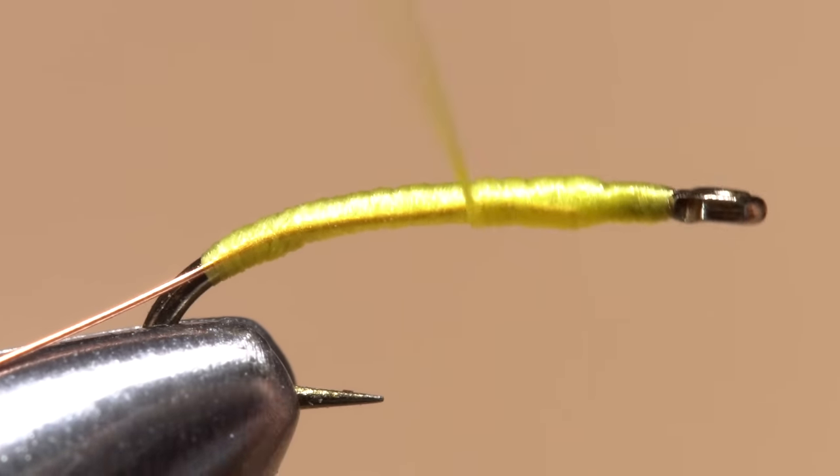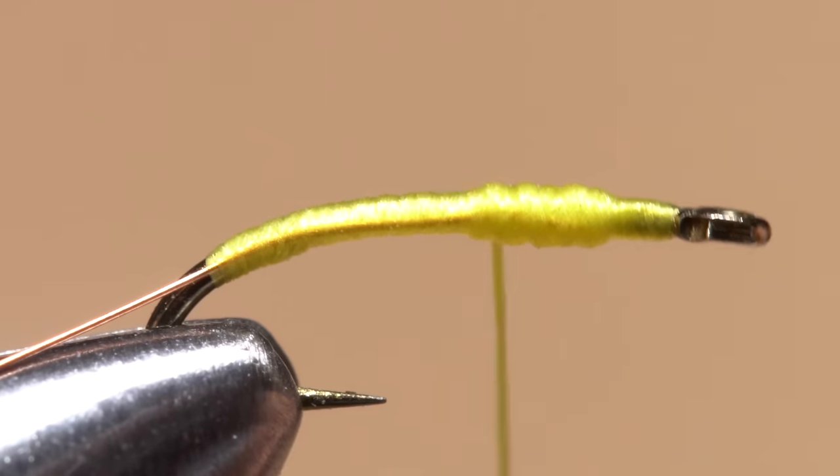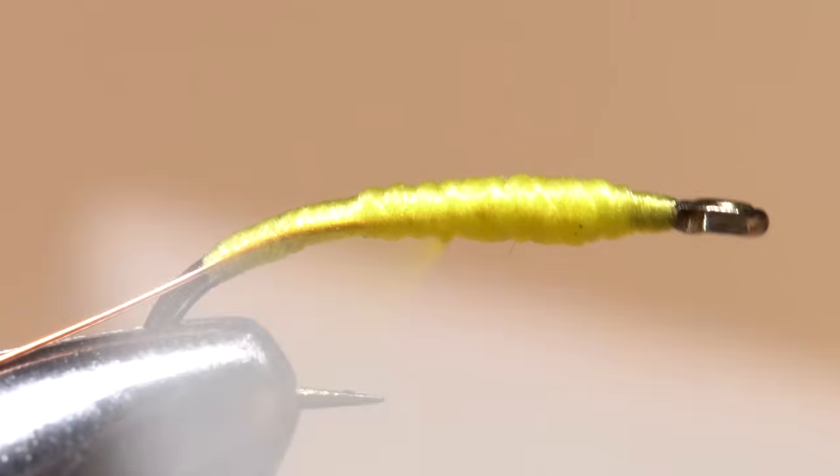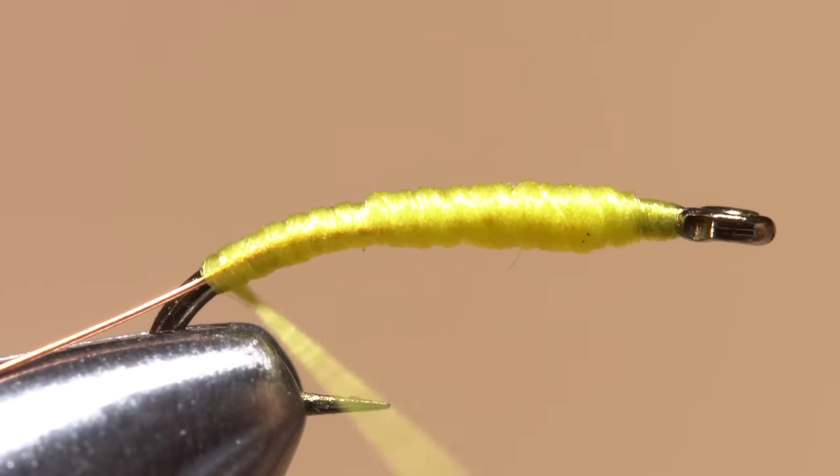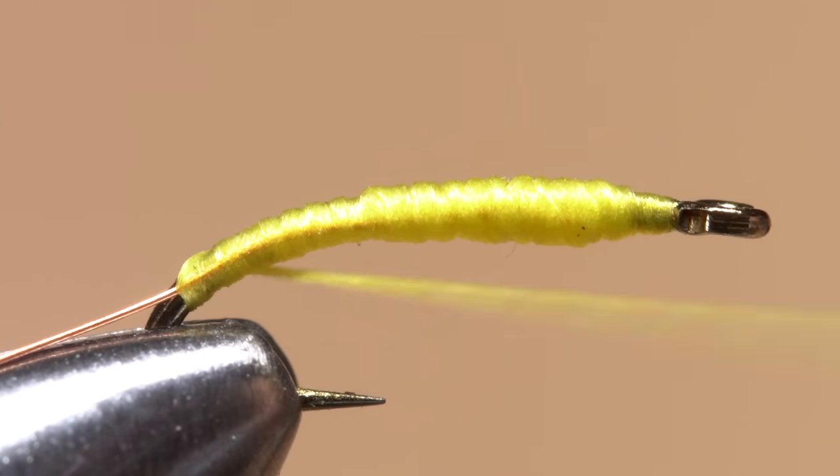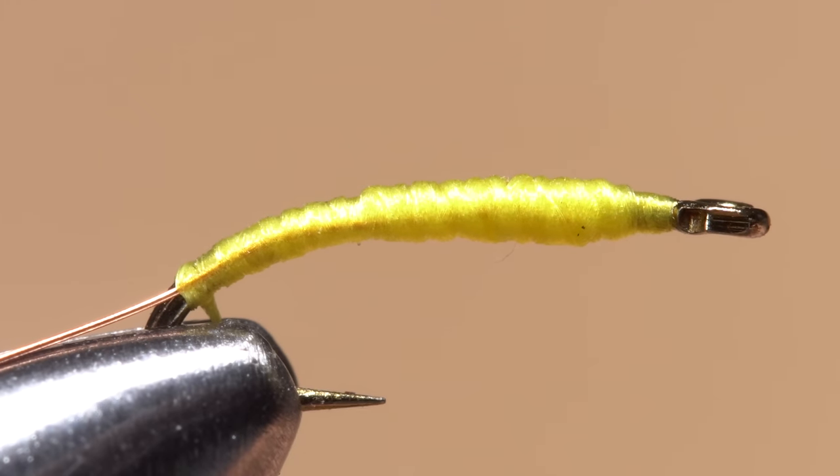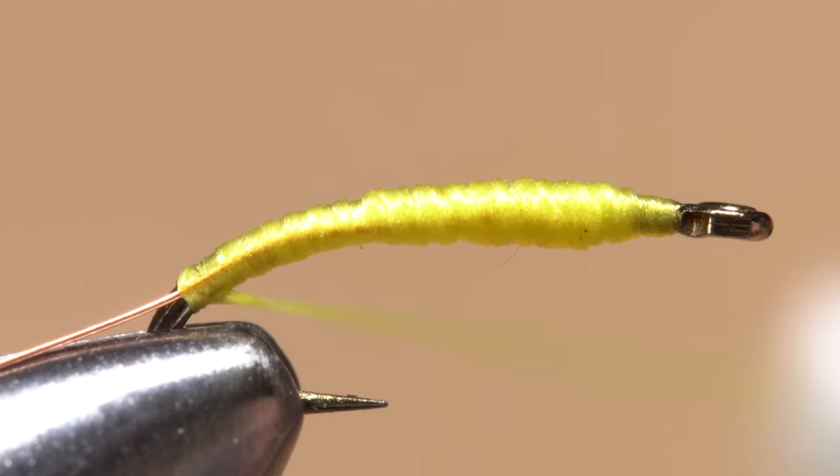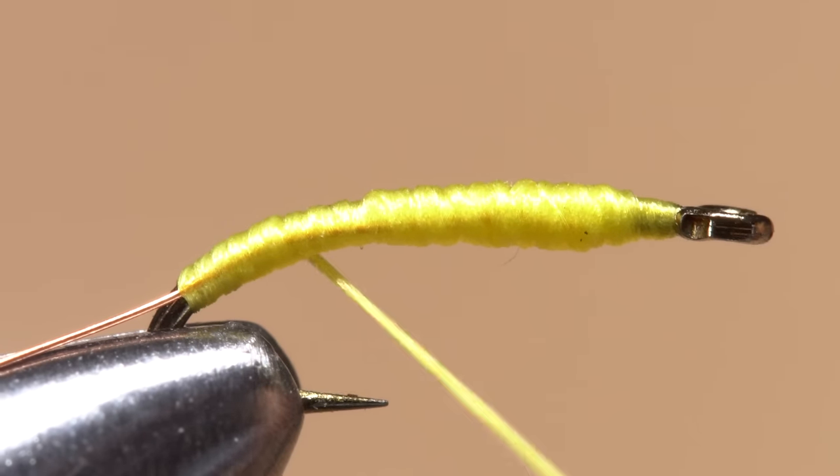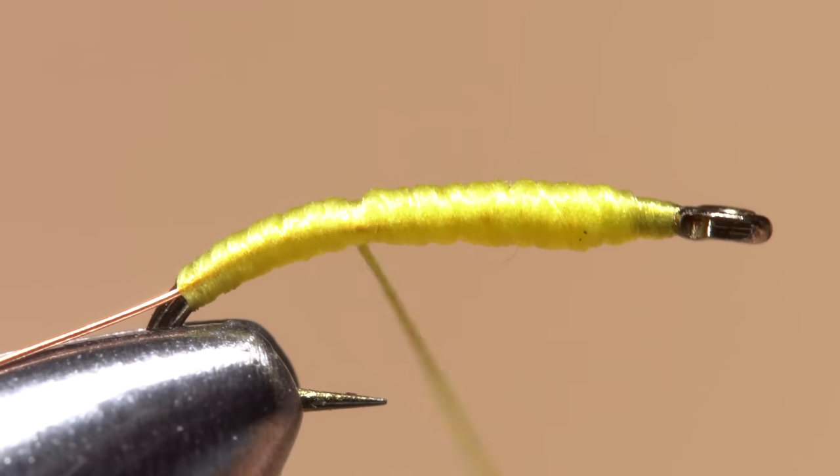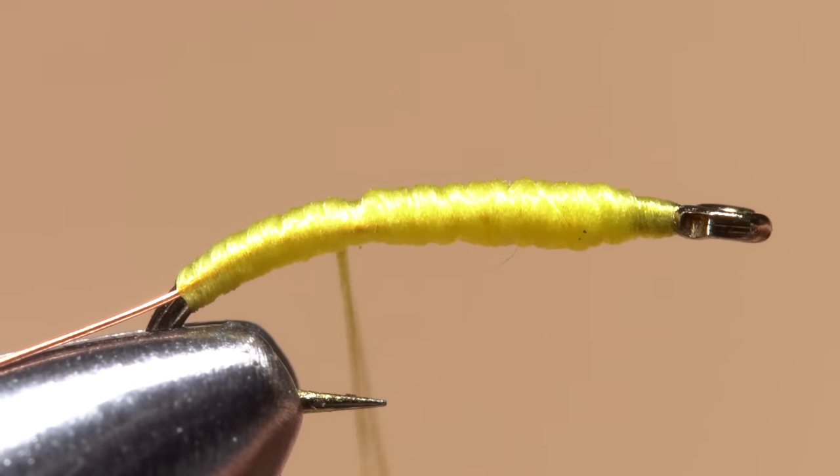Then wrap one-third of the way down the hook shank and back up, followed by two-thirds of the way down and back up, then all the way down to the end wraps but stop there. Give your bobbin a counterclockwise spin, as if you're looking down on it, to flatten out your tying thread. Use the flattened thread to smooth out the previous wraps, giving your bobbin a counterclockwise spin every so often to uncord and flatten the thread.